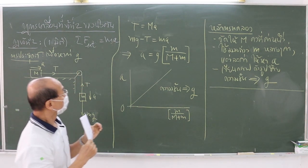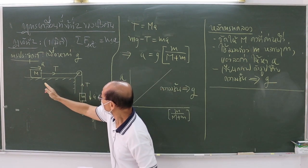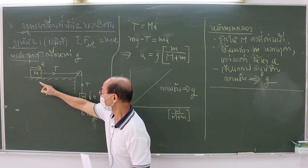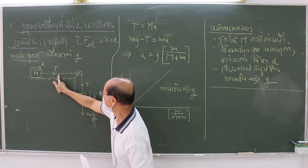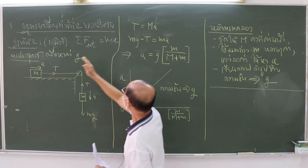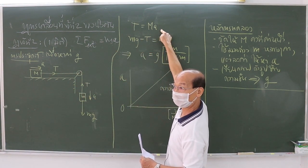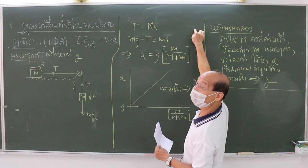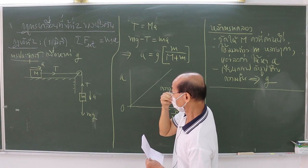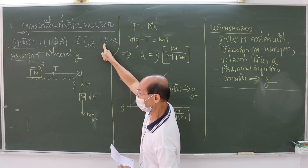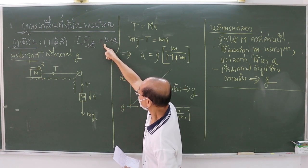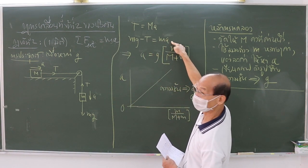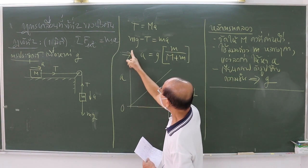For this motion, we can apply the second law to the motion of the two masses. For the first mass, the only force is the string tension T. So the equation of motion for mass capital M can be written as that equation in your book. Similarly, when applying the second law to the smaller hanging mass m, the equation of motion is written as the third equation.